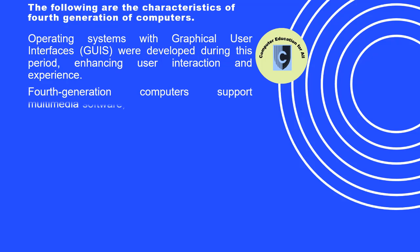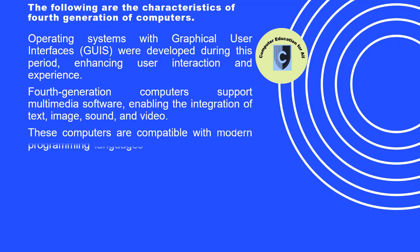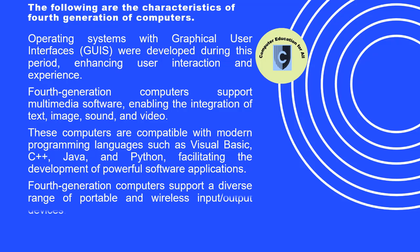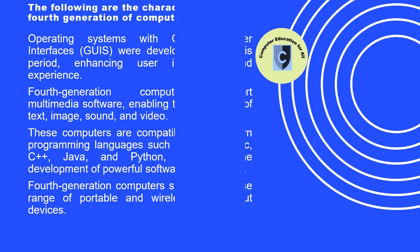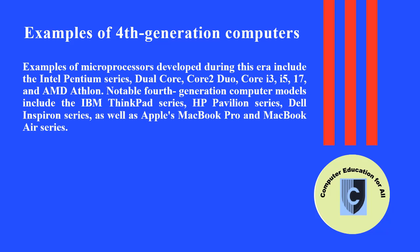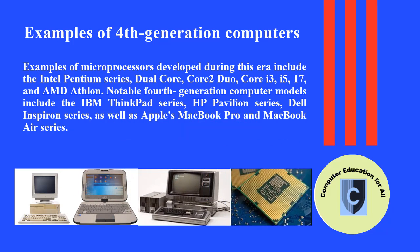Fourth generation computers support multimedia software, enabling the integration of text, image, sound, and video. These computers are compatible with modern programming languages such as Visual Basic, C, Java, and Python, facilitating powerful software development. They support diverse portable and wireless input-output devices. Examples of microprocessors from this era include the Intel Pentium Series, Dual Core, Core 2 Duo, Core i3, i5, i7, and AMD Athlon. Notable computer models include the IBM ThinkPad Series, HP Pavilion Series, Dell Inspiron Series, and Apple's MacBook Pro and MacBook Air Series.